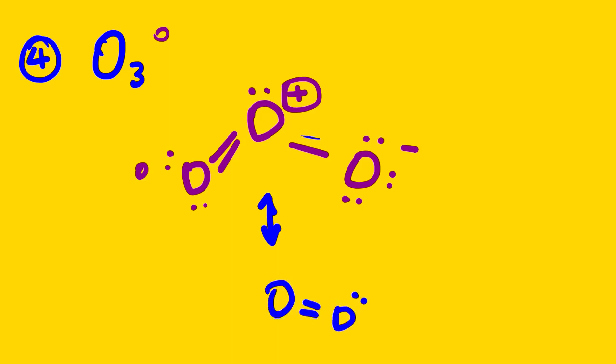So this is one of the correct structures of O3. The original structure of O3 simply has a double bond here instead. So we can just redraw everything but put the double bond on the other side — that is the resonance structure of O3.